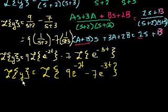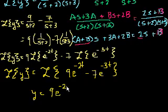Now we have something interesting. The Laplace transform of y is equal to the Laplace transform of this. Well, if that's the case, then y must be equal to 9e to the minus 2t minus 7e to the minus 3t.